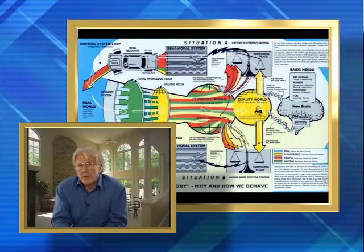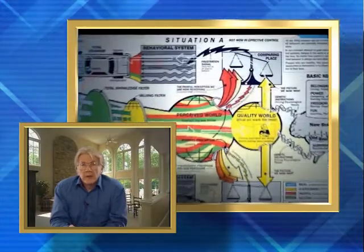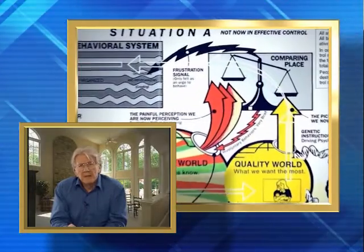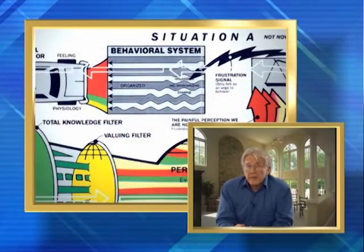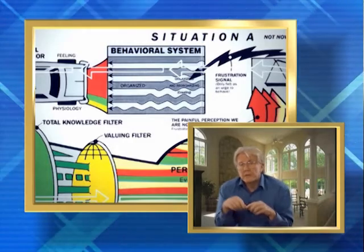I'm looking at the chart and how there are those arrows going from the perceived world to the scales. Tell us what that means. All behavior is always our best attempt at the time to satisfy a picture from our quality world. We become aware that the picture is unsatisfied by the tipping of the scale in the comparing place. The tipped scales produce an urge or signal to do something. I can then choose a behavior that I've learned or create a new one that will increase my sense of effective control over my life. The more the scale is tipped, the stronger the signal, the stronger my urge to behave.